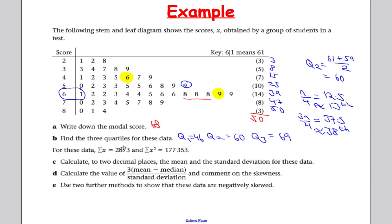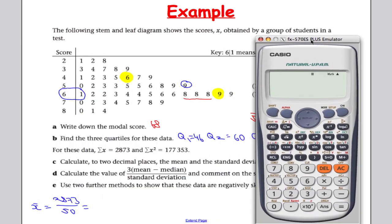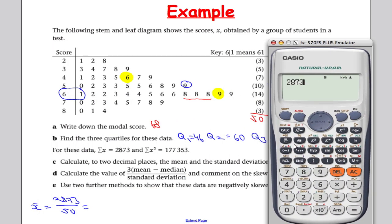For these data, we're given the sum of x equals 2,873 and the sum of x squared is 177,353. We're asked to calculate to two decimal places the mean and standard deviation. So the mean, x bar, equals the sum of the x values, 2,873 divided by the number of values, which is 50. Bringing out the calculator, 2,873 divided by 50 equals 57.46. So 57.46.